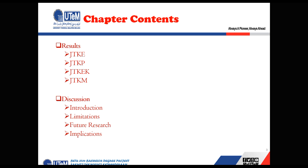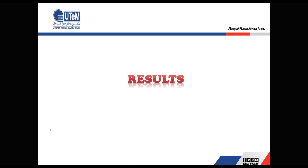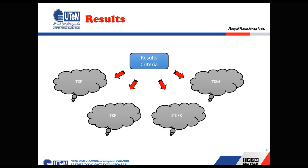The chapter content — Chapter 4 of your thesis — should cover results and discussion. Results have different types depending on department: JTKE, JTKP, JTKEK, and JTKM. The discussion part should have four important things: introduction, limitations, future research, and implications. You may or may not specify these as separate headings in the discussion part, but you have to make sure that all these things are included.